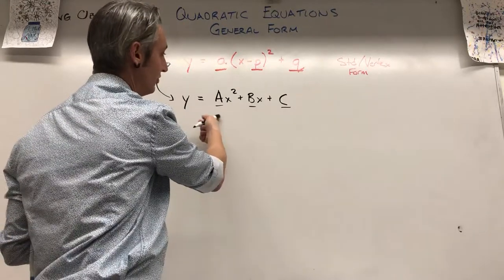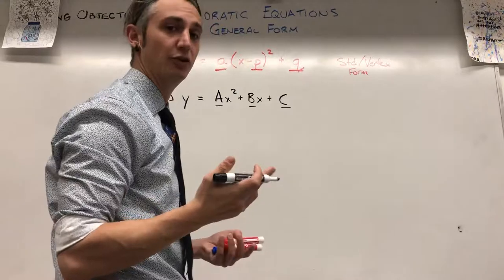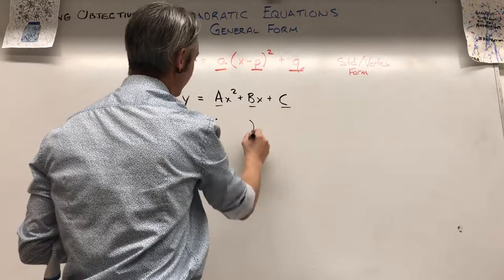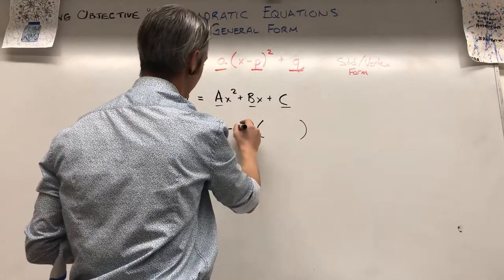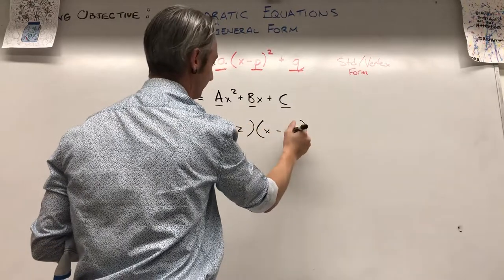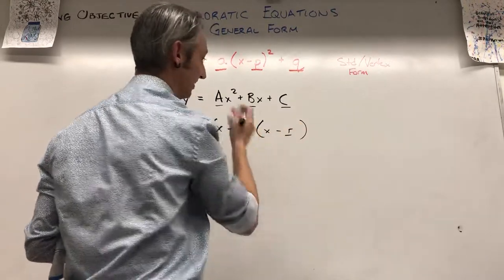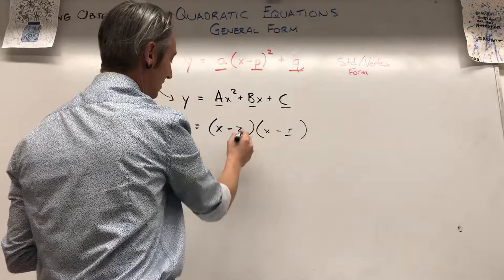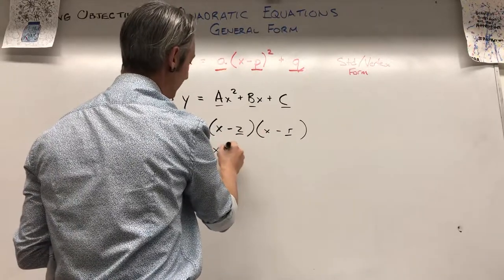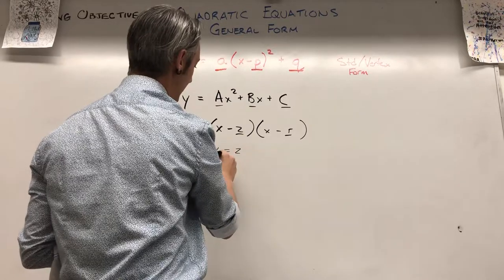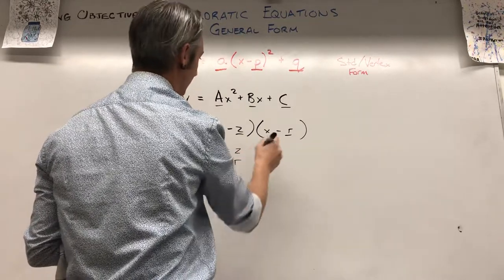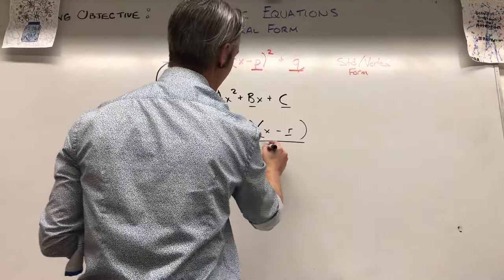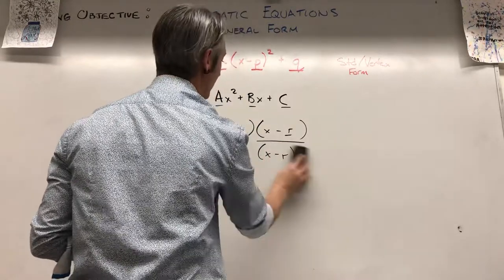So why use general form? One thing we can do with general form is factor it. If we set y = 0 and use polynomial factoring, we get something like (x - z)(x - r), where z and r are numbers. When we factor it, we find our x-intercepts. If we divide out one factor, the other gives us our x value.